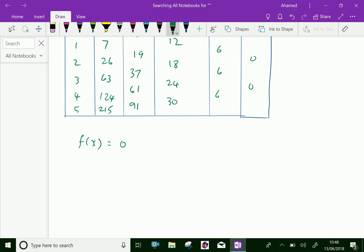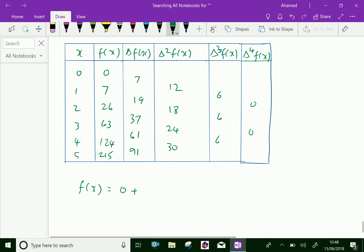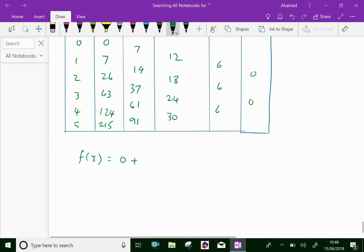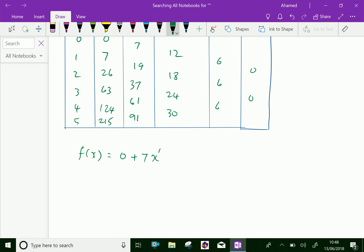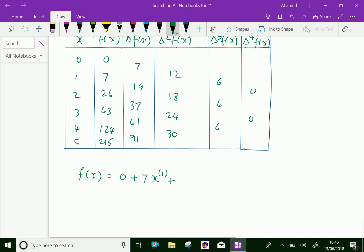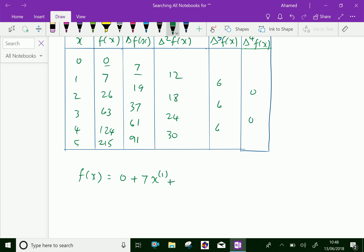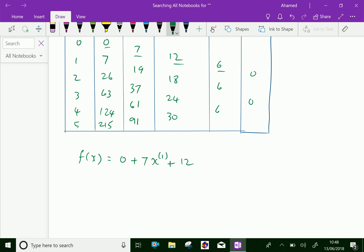f of 0 is already 0, plus delta f of 0 is 7, so 7 into x power 1 plus delta square f of 0 is 12. So 12 by 2 factorial x power 2 plus 6 over 3 factorial x power 3.